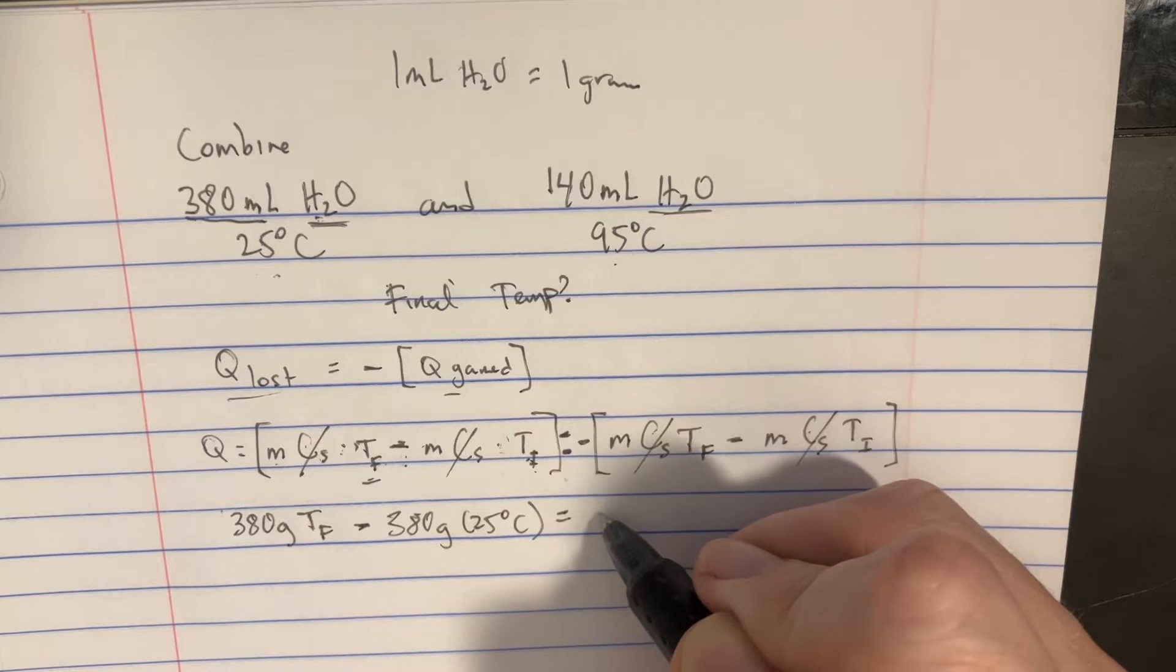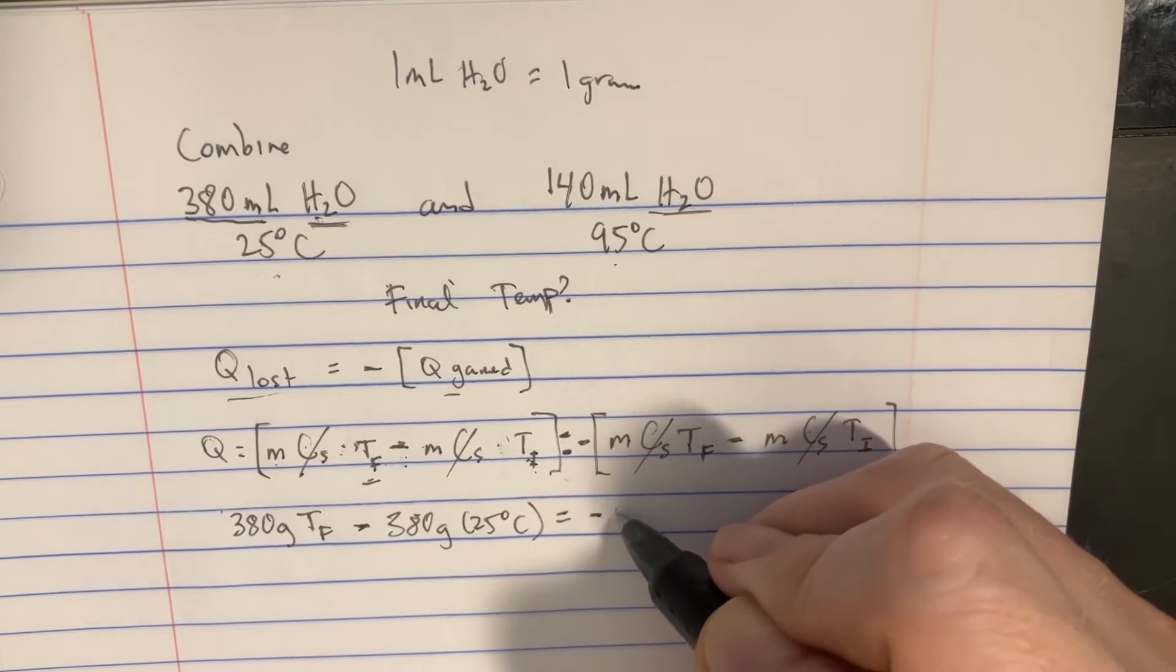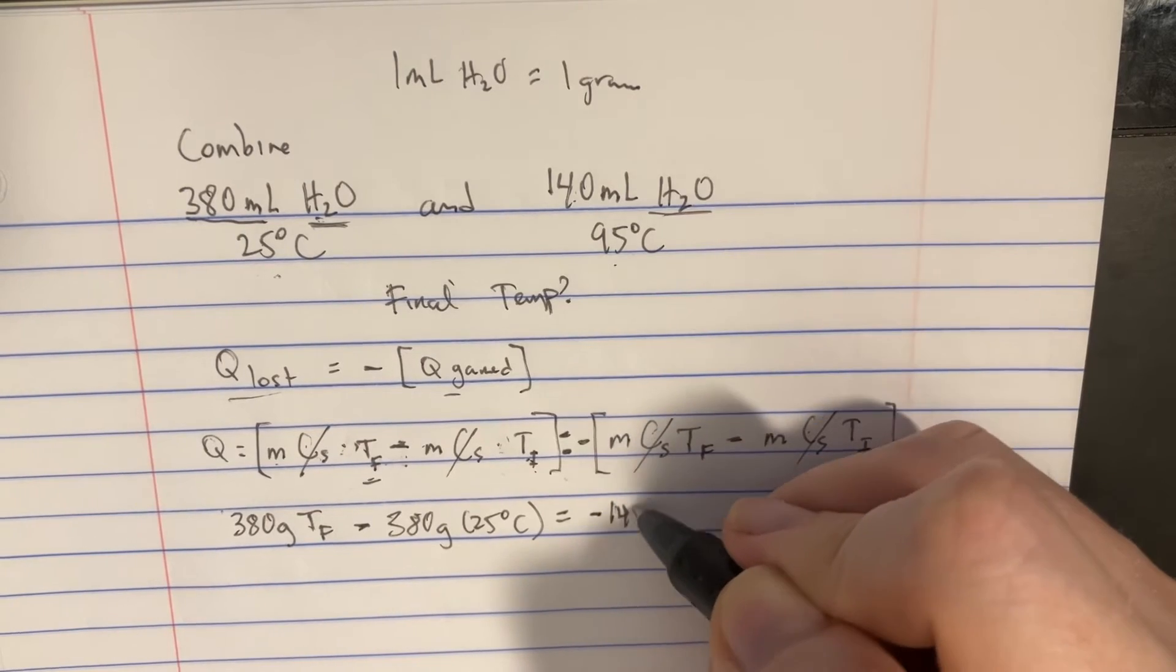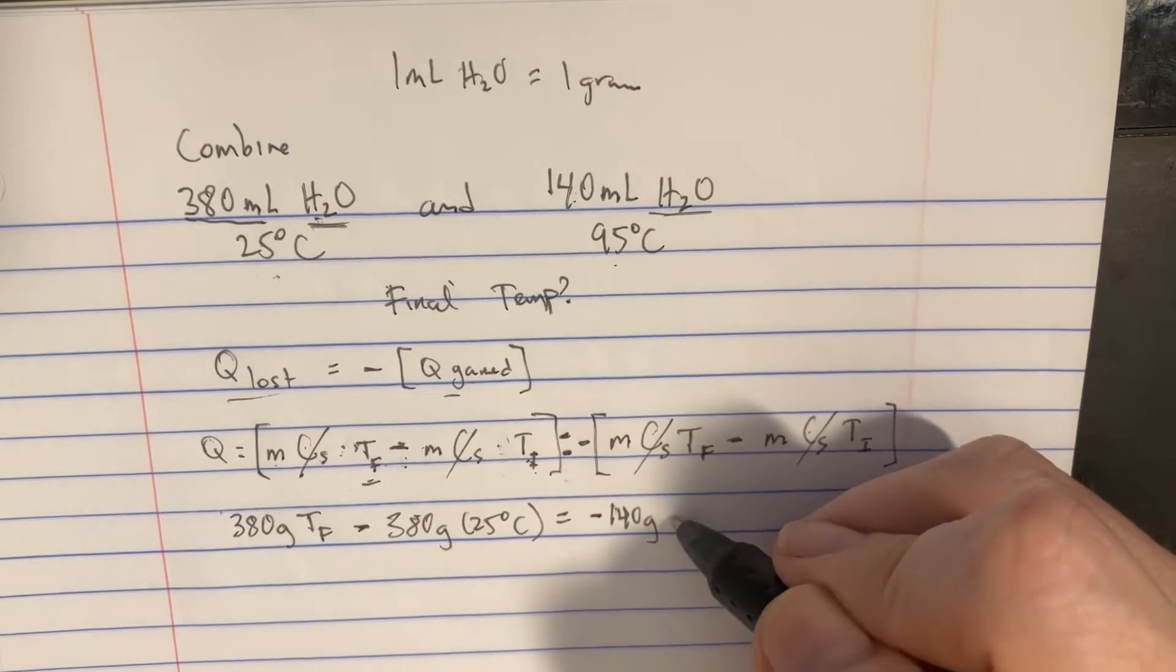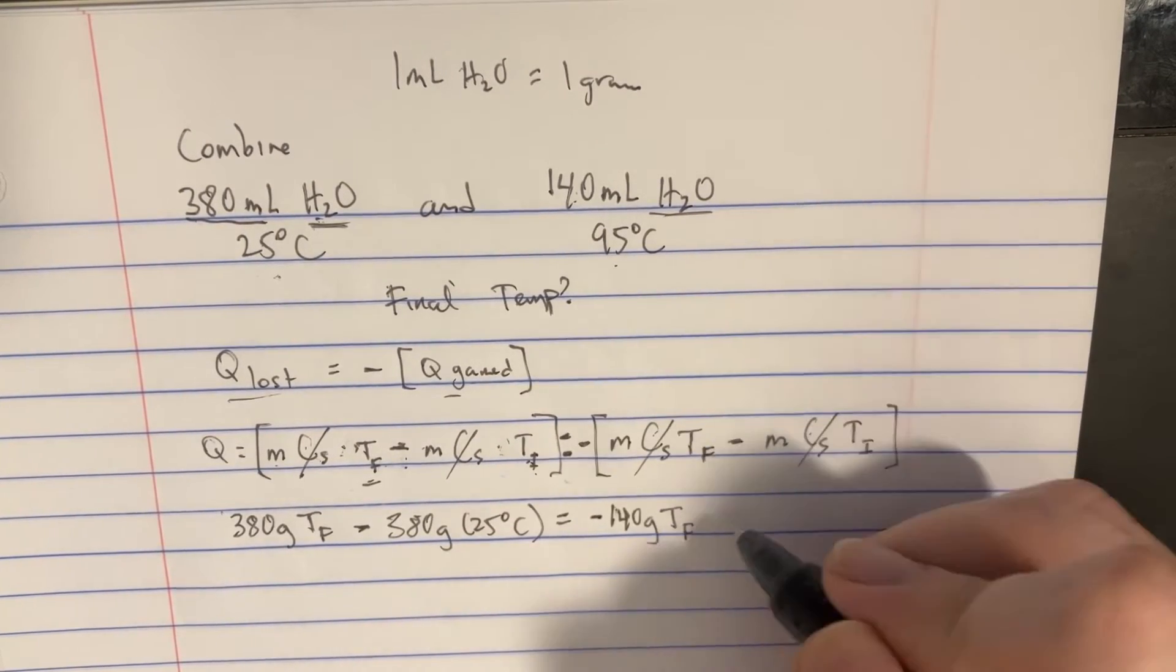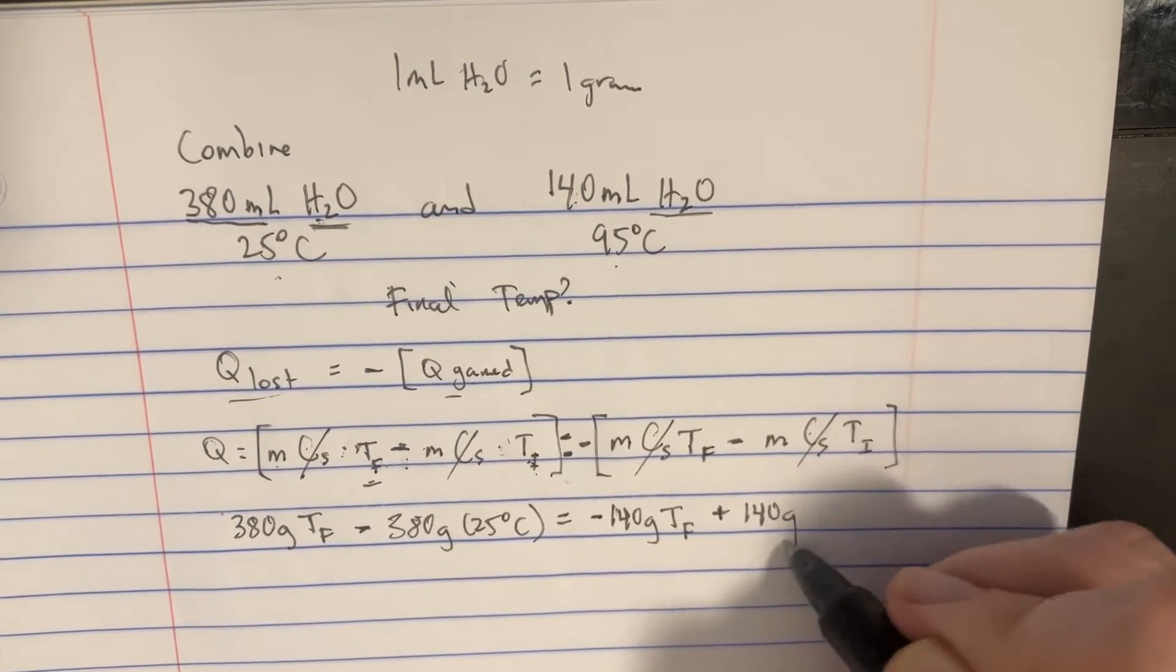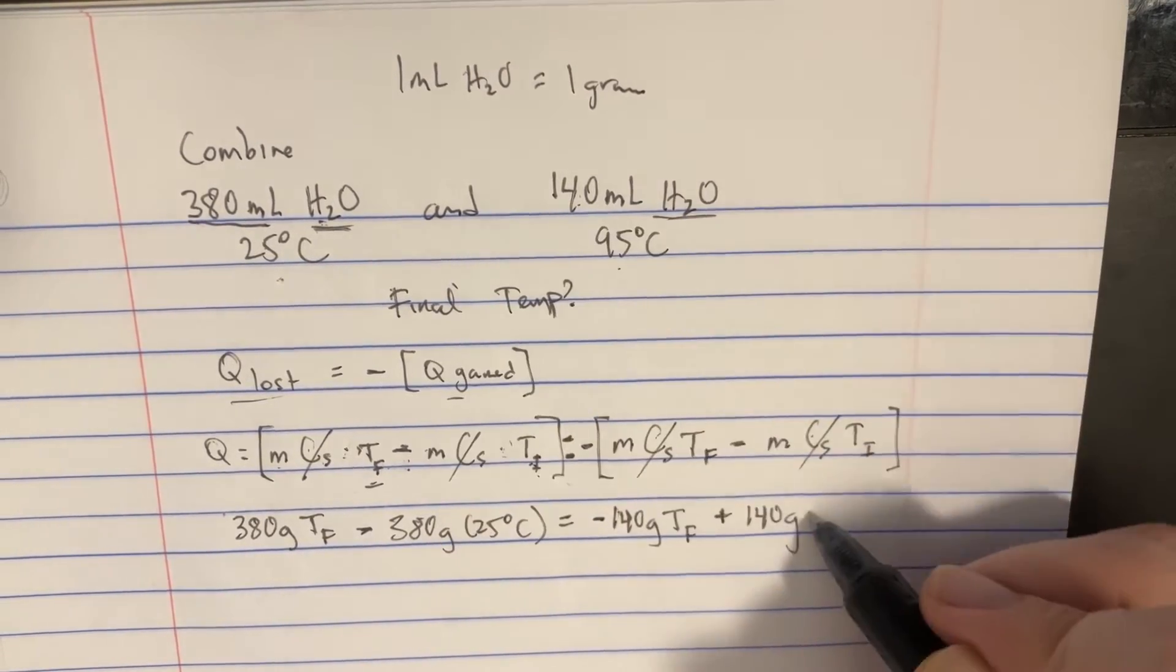And then we could set that equal to negative, or actually this one's going to be 140 grams, and then the final temperature we don't know that. We're going to distribute this so it becomes positive. And over here we have 140 grams, and then the initial temperature is 95 degrees.